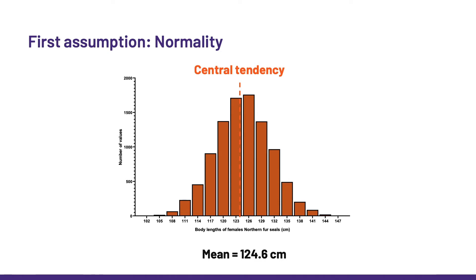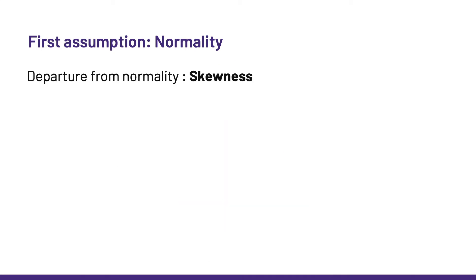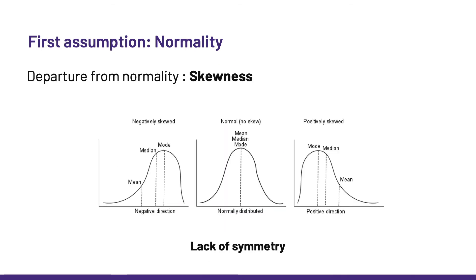There are two main departures from normality. The first one is skewness, which is basically a lack of symmetry. Data can be positively skewed with the tail on the right, or negatively skewed with the tail on the left. This is easily spotted if we take the time to explore our data, and it is easy to see how much it matters, even if one knows nothing about stats. Looking at this mean here, we see how misleading it would be in summarizing data.